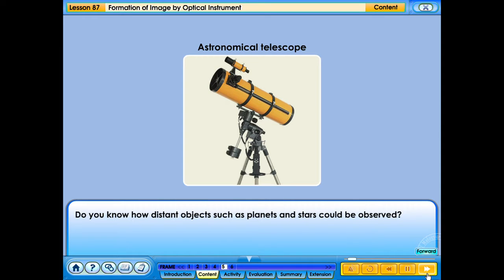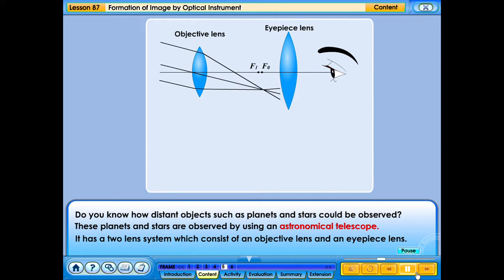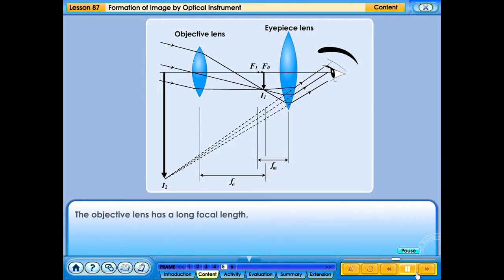Do you know how distant objects such as planets and stars could be observed? These planets and stars are observed by using an astronomical telescope. It has a two-lens system which consists of an objective lens and an eyepiece lens. The objective lens has a long focal length. The eyepiece lens has a shorter focal length. It magnifies the real image produced by the objective lens. The eyepiece finally forms an enlarged and inverted image.